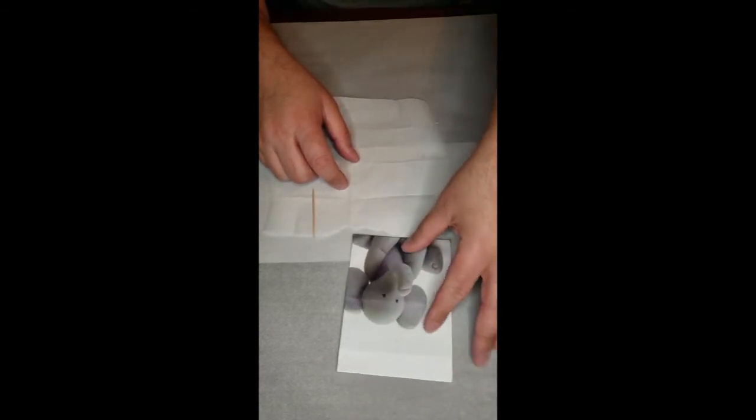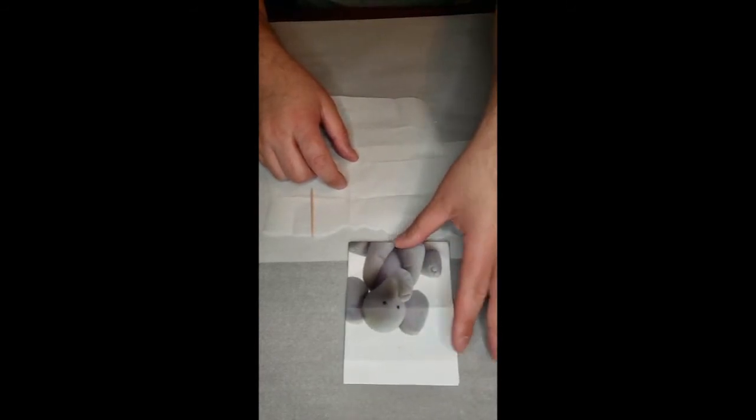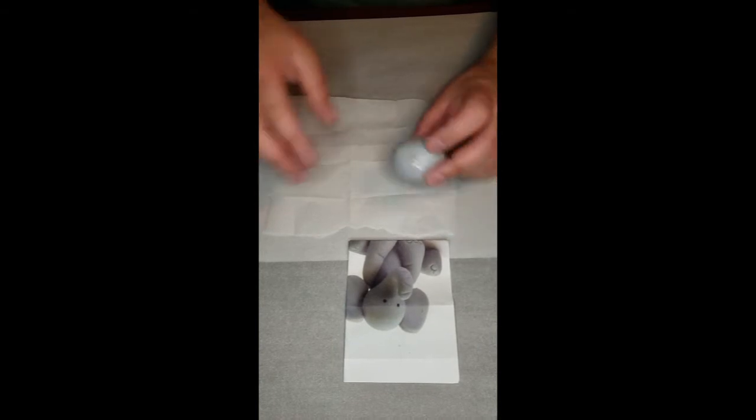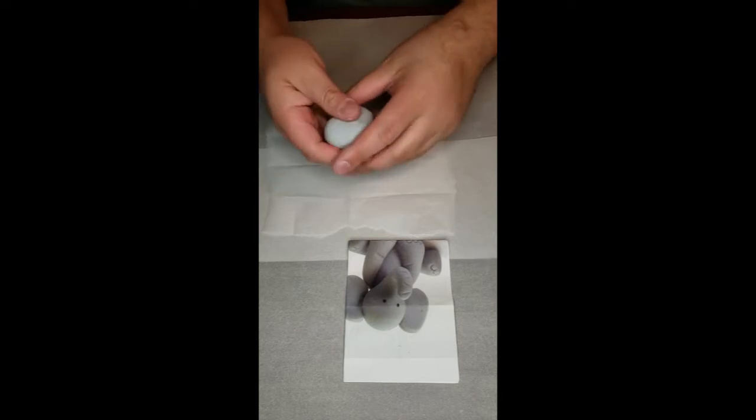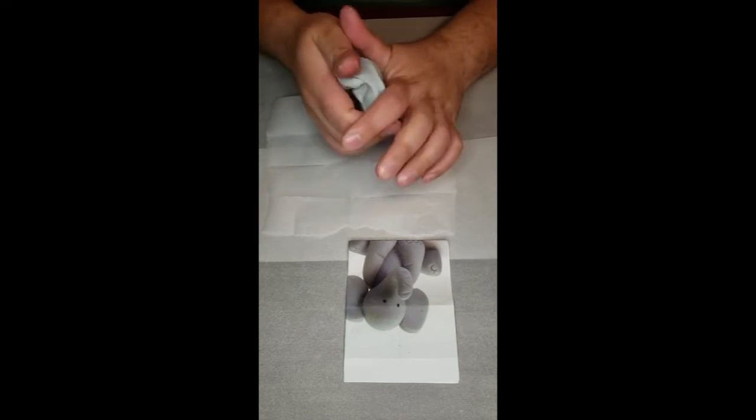This is the elephant that we will be making. We are going to open up the fondant and we are going to knead the fondant to ensure there are no dry spots.